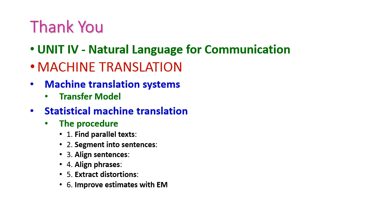So far, we have seen Machine Translation from the fourth unit, Natural Language for Communication. We covered two subtopics: Machine Translation System with the Transfer Model, and Statistical Machine Translation with a six-step procedure to translate from one language sentence to another, illustrated with an example. In the next class, we will see another important topic from the fourth unit. Please go through your textbook for more information. Thank you.